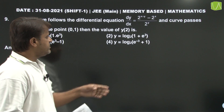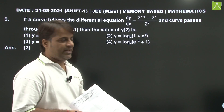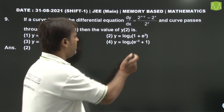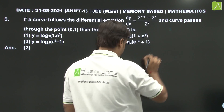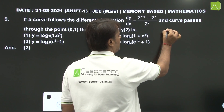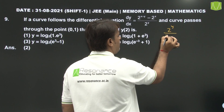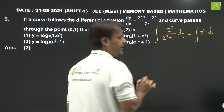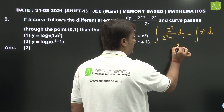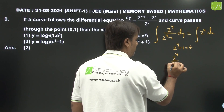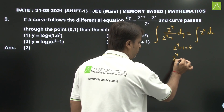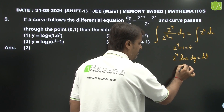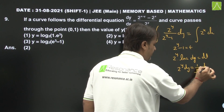Question number 9: A curve follows a differential equation and passes through the point (0, 1). Find y(2). Using variable separable method: integrating (2^y divided by (2^y minus 1)) dy equals integrating 2^x dx. Substituting 2^y minus 1 equals t, so 2^y times log 2 dy equals dt, meaning 2^y dy equals (1 upon log 2) dt.